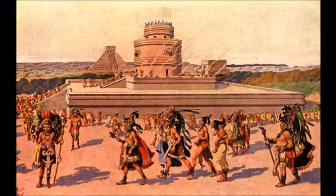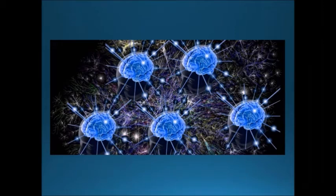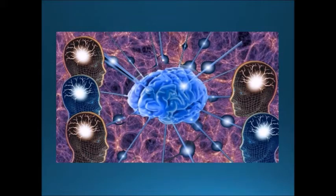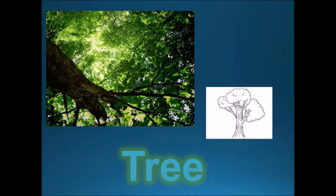Marshall McLuhan was a media theorist who talked about how all our media and tools are extensions of ourselves. The wheel is an extension of the foot, the telescope an extension of the eye, the book an extension of the eye. Language itself, as a technology we developed, is an actual extension of our nervous system. Korzybski uses 'nervous system' to refer not just to the brain but to the whole brain of the body. McLuhan and Korzybski shared the idea that through this extension of our nervous system we create a map of reality — communicating about reality through abstractions and models.